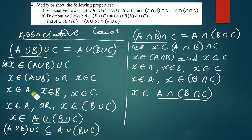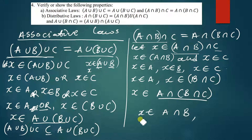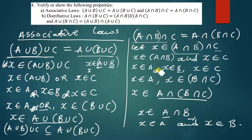The key words to use: for union, when x is a member of A union B, x is either in A or in B — so use 'or.' For intersection, when x is a member of A intersection B, x is in both A and B — so use 'and.' Those are the key words for intersection and union.